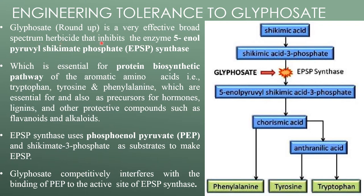Glyphosate inhibits the enzyme 5-enol pyruvyl shikimate-3-phosphate synthase, also called EPSPS, which is essential for the protein biosynthetic pathway of aromatic amino acids such as tryptophan, tyrosine, and phenylalanine.